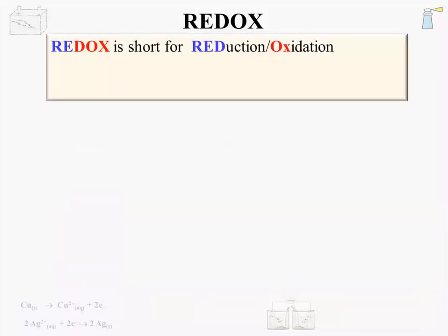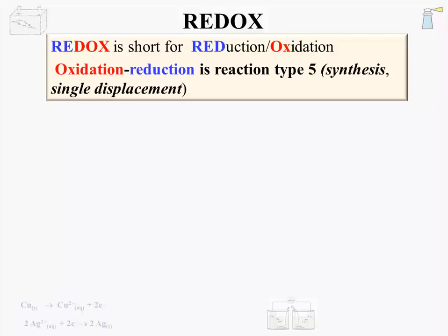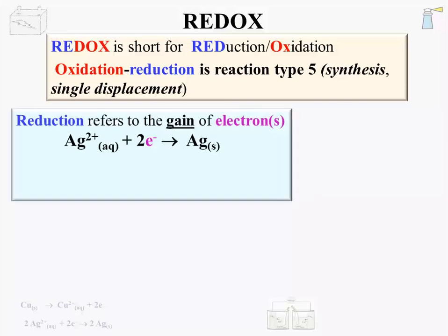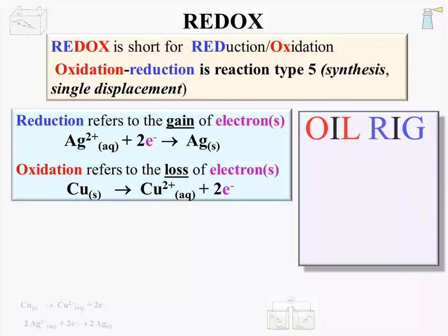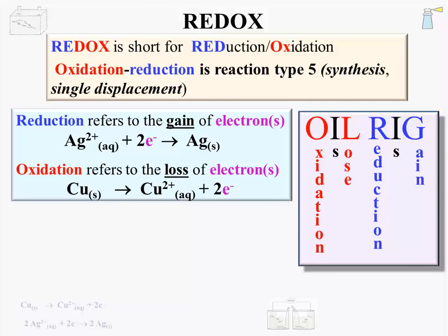Redox is short for reduction oxidation. Oxidation reduction is reaction type 5 as covered in the types of reaction lecture. Some redox reactions also fall under synthesis and single displacement reactions. Reduction refers to the gain of an electron or electrons. Oxidation refers to the loss of an electron or electrons. A helpful acronym for keeping the connection between oxidation-reduction and loss-gain straight is OIL RIG — the first letter of each word in 'oxidation is loss and reduction is gain.'